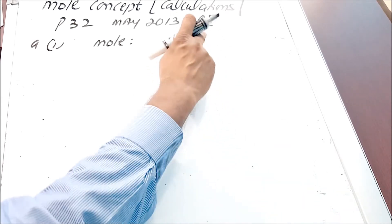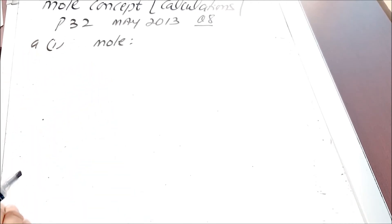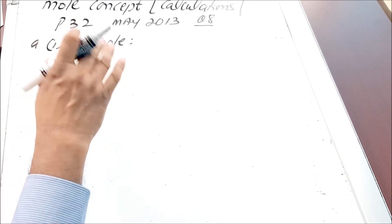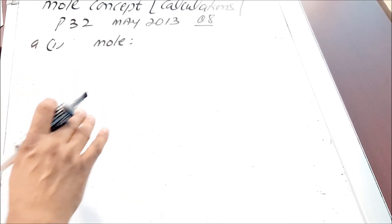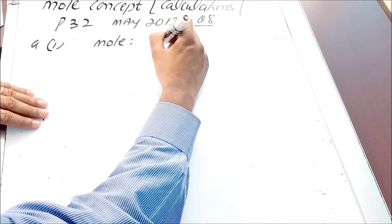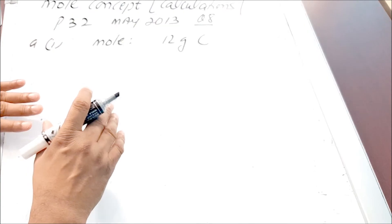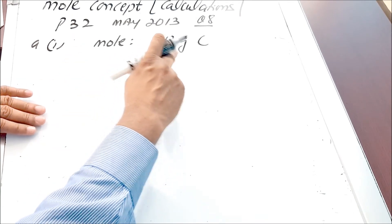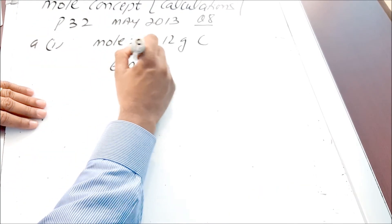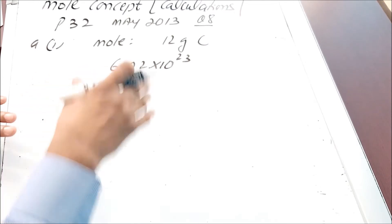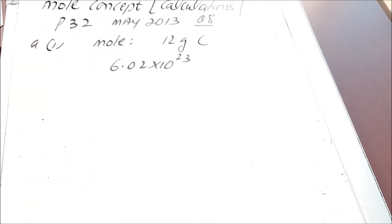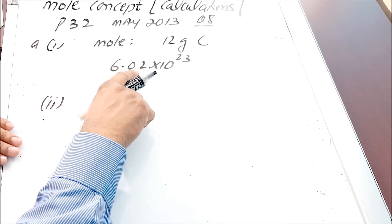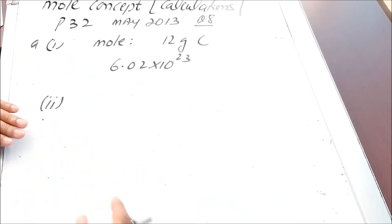For the third question, I picked question 8 from paper 32, May 2013. This question starts by asking students to define mole. A mole is a collection of particles exactly equal in number to the particles in 12 grams of carbon — which is 6.02 × 10²³. Avogadro's constant is that number: 6.02 × 10²³, or the number of particles present in one mole of any substance.